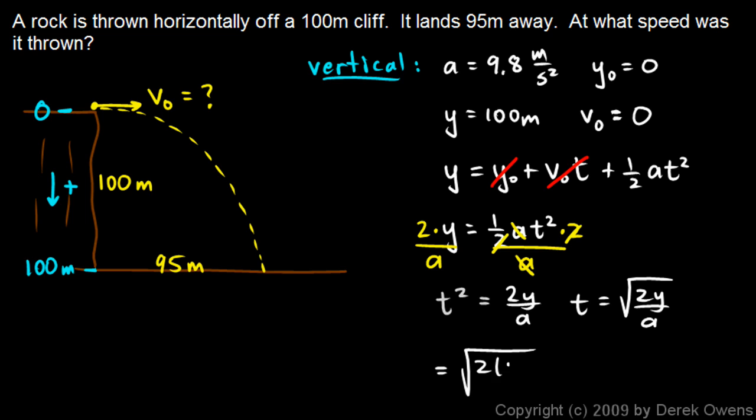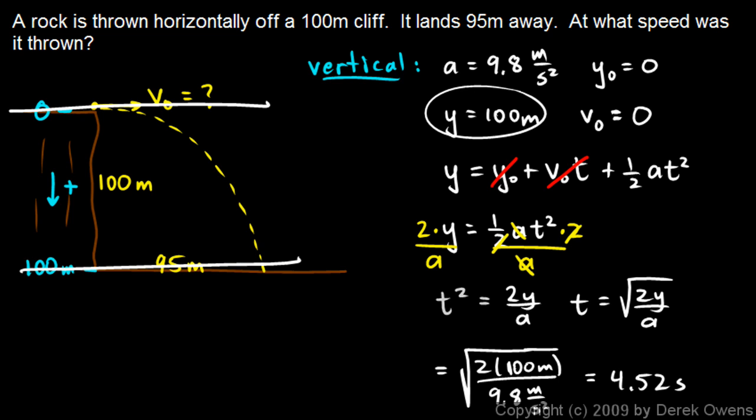So let's put in those numbers. That's the square root of 2 times 100 meters—y there, that's our final position—100 meters over a, which is 9.8 meters per second squared. So you take out the calculator. 2 times 100 is 200. You divide that by 9.8, and then you take the square root of all of that. And it comes out to 4.52 seconds. Now we were just dealing with the vertical motion. So this is the time that it takes to fall from a height of 0 to a height of 100 down there.